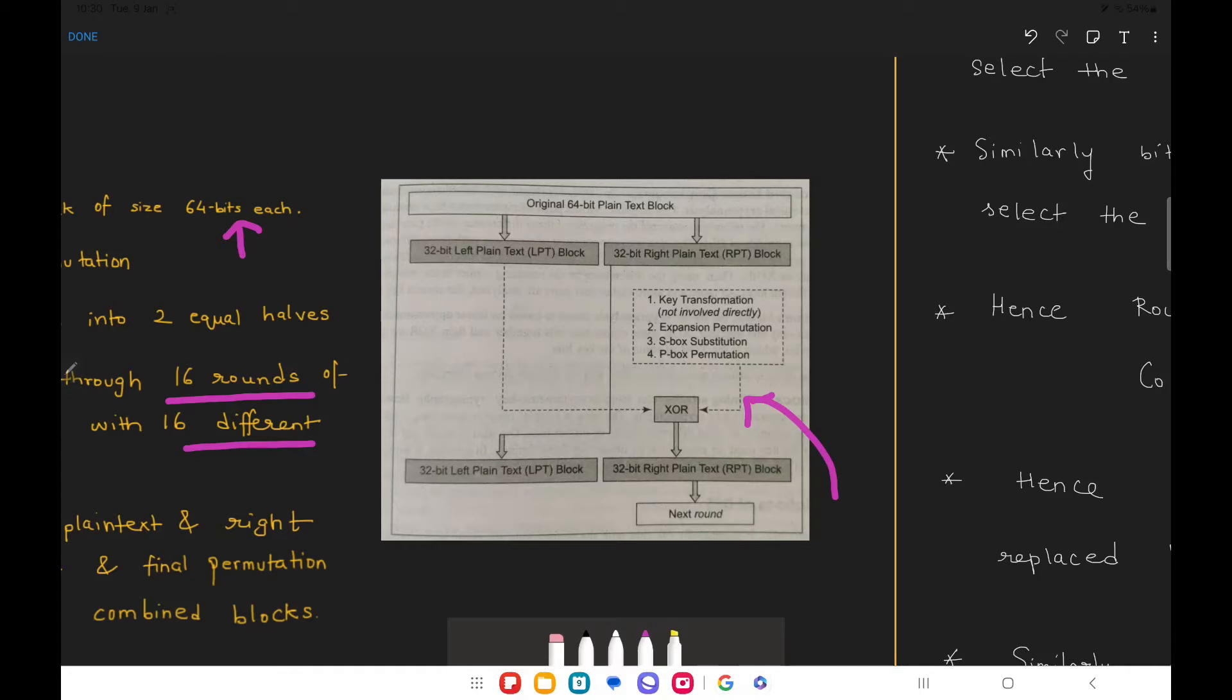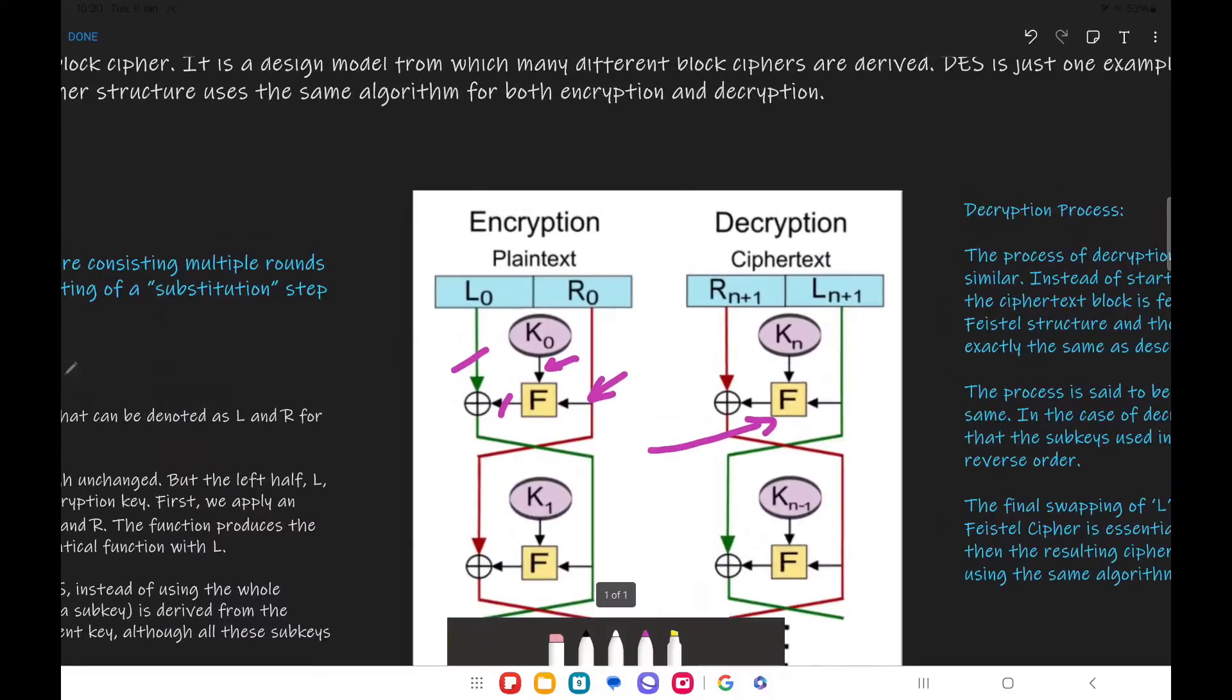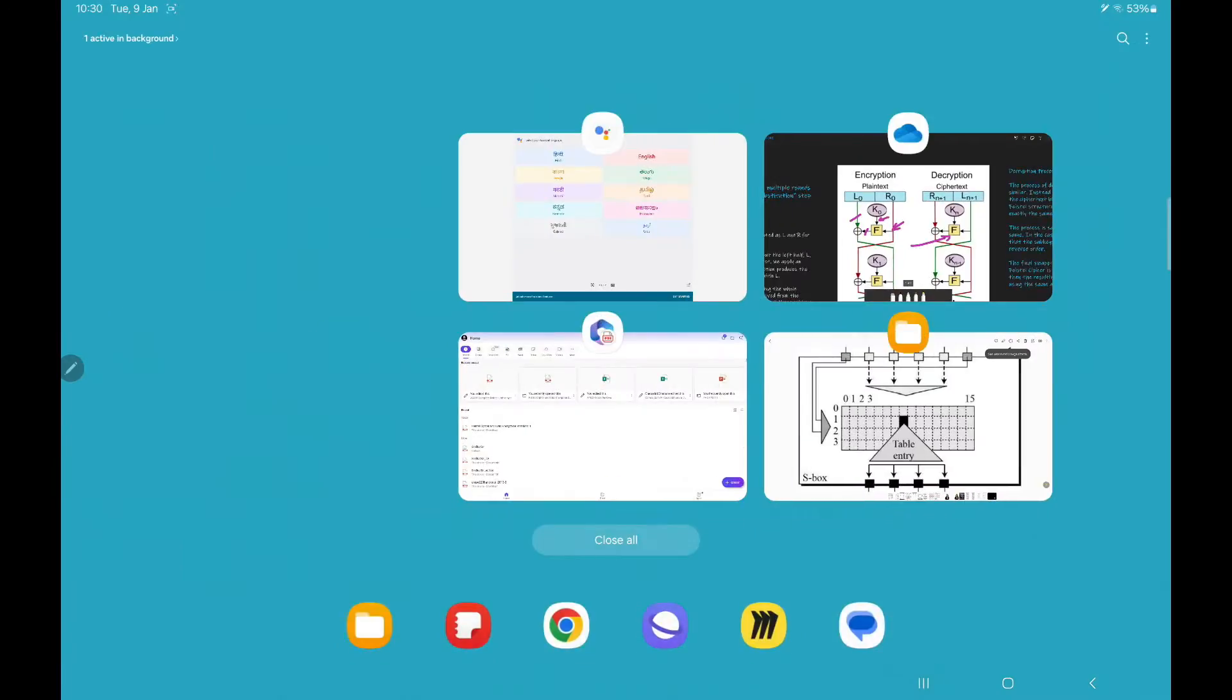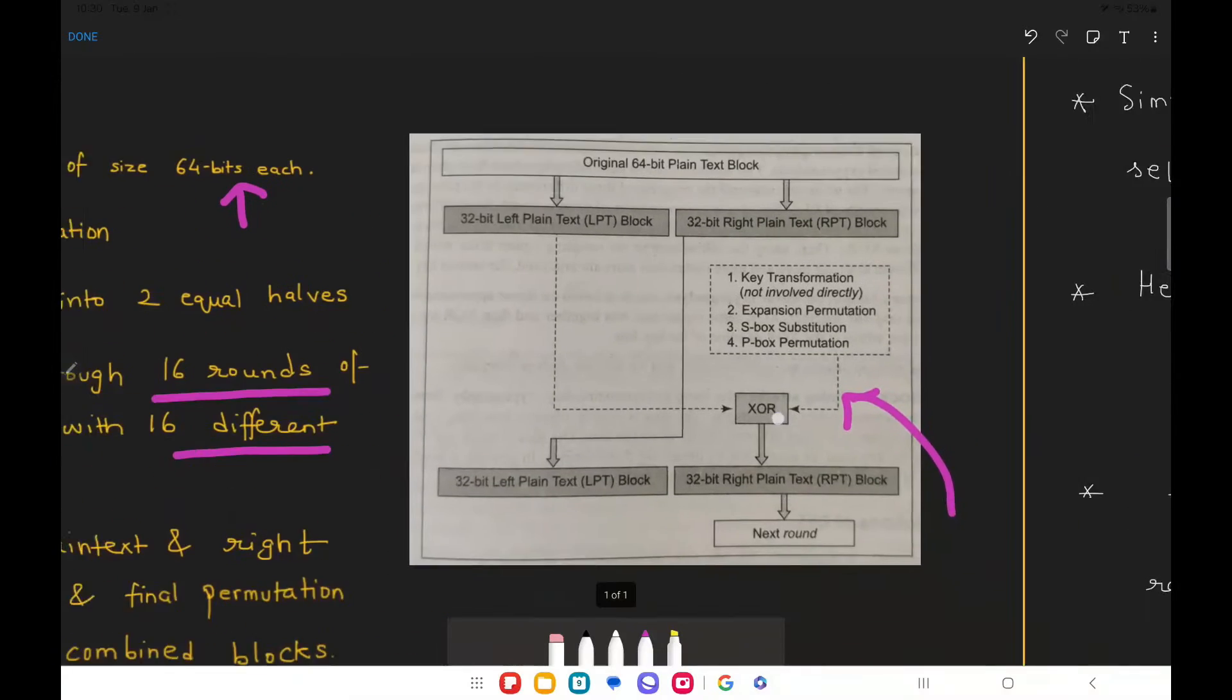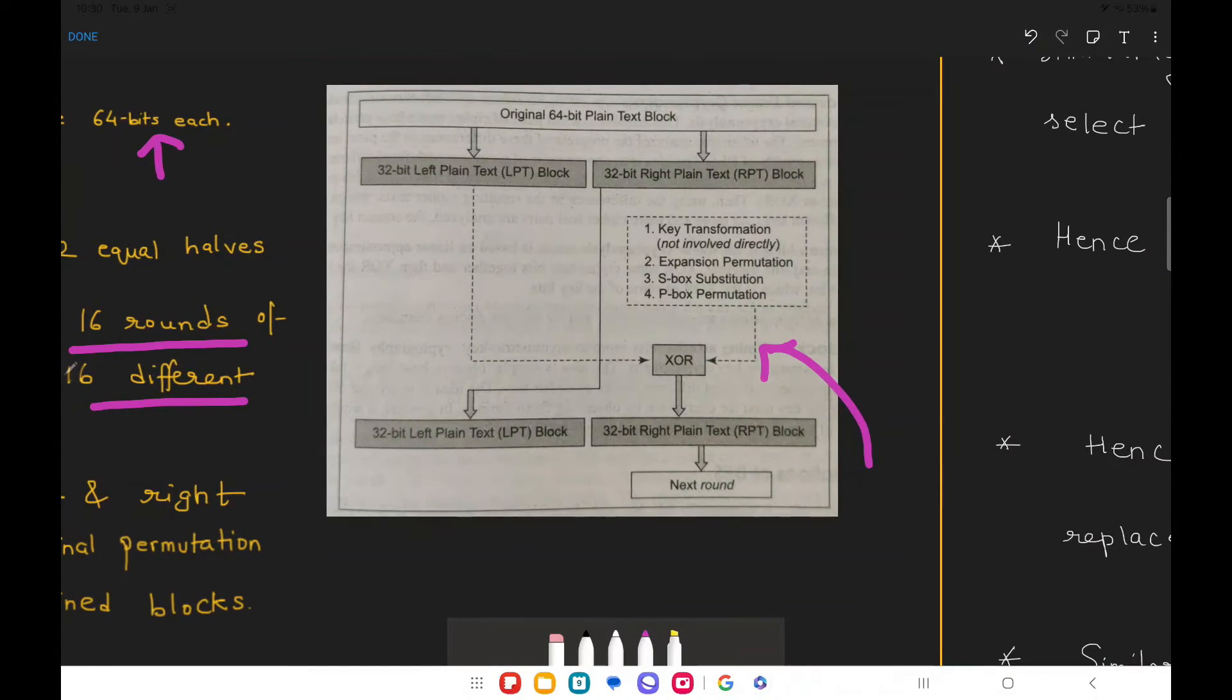Now very few things are left. For example, the output of this function block will now be XORed with LPT. As we have already seen in this diagram the output of the function block will now be XORed with the LPT and that is what's going to happen over here. The function round's output is XORed with LPT and whatever is the output over here, that particular output becomes your new RPT.